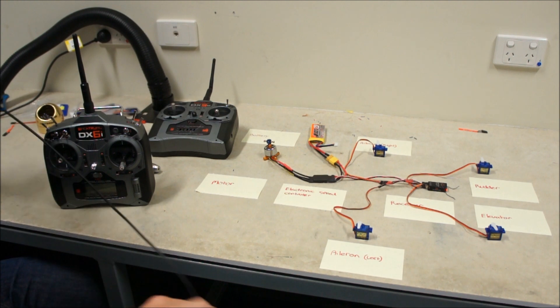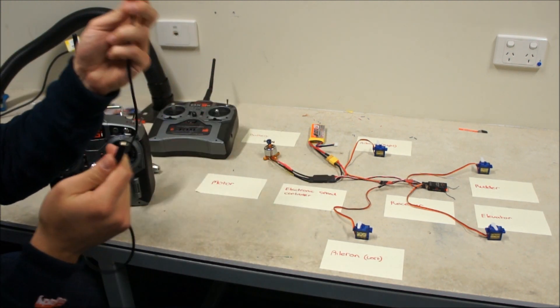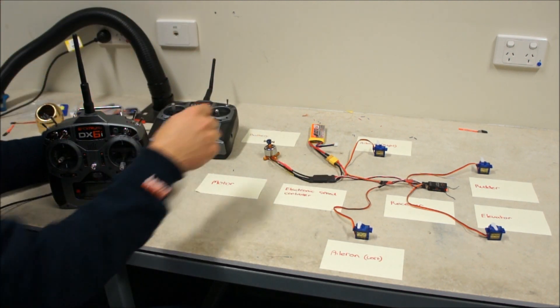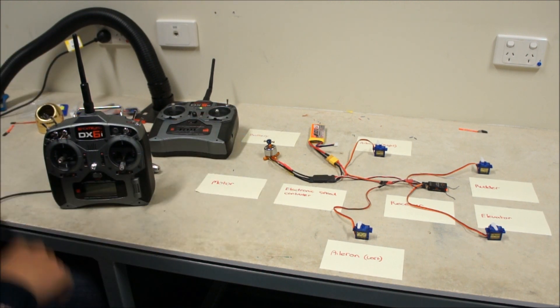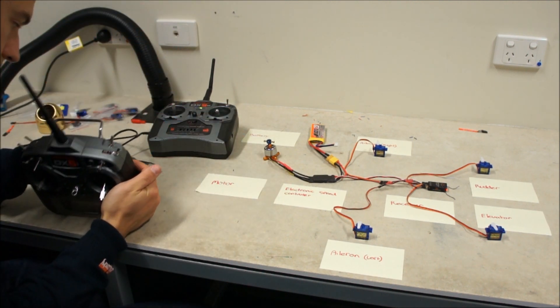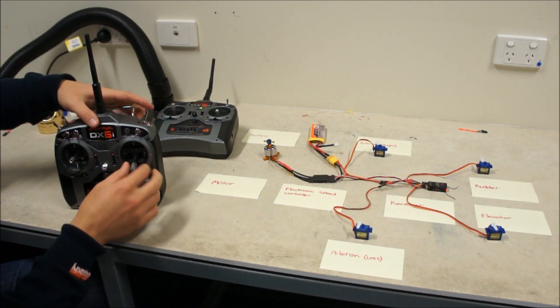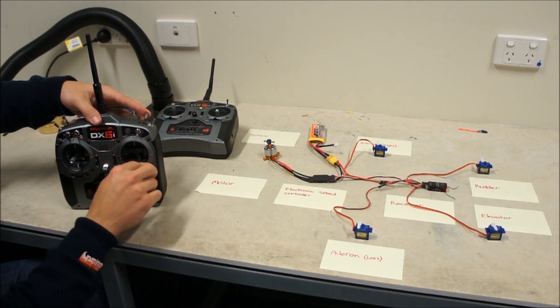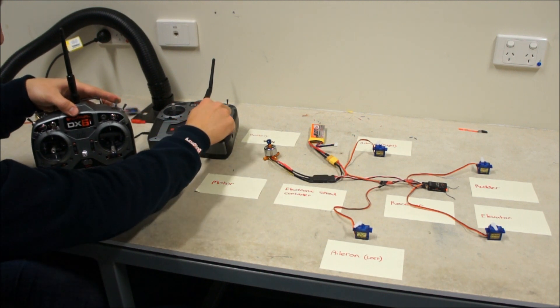This little short test cable that I've made. Stereo to mono. Mono side on the DX5e. Stereo side on the DX6i. And control. When I switch it up, I've no longer got control, but I do have it over here.